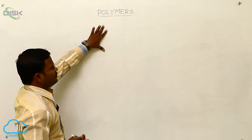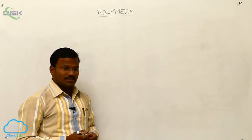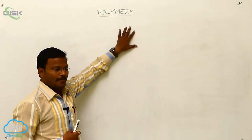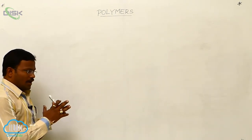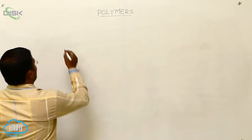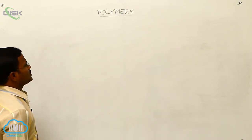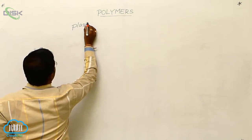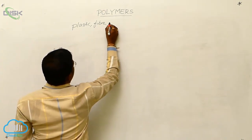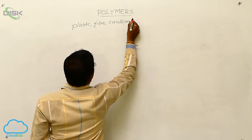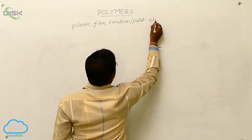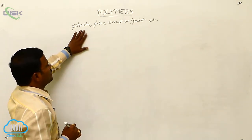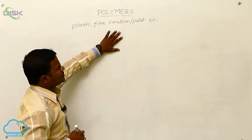Let us learn about the concepts related to polymers. What are polymers and what is the need of polymers? We cannot imagine our life without polymers because in various forms and various applications, polymers are around us. These polymers are used as plastic, fiber, emulsion, or paint. Polymers are the backbone of the plastic industry, fiber industry, emulsions, and paint industry.